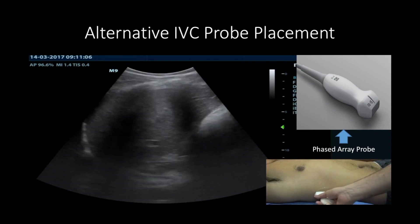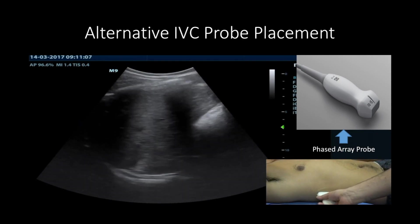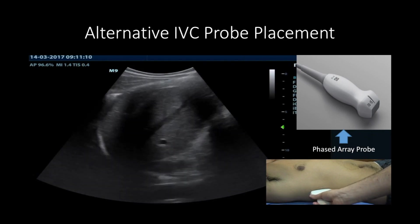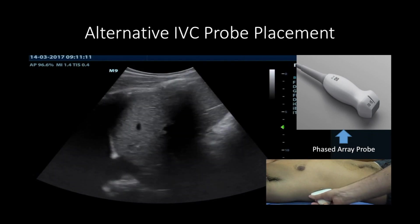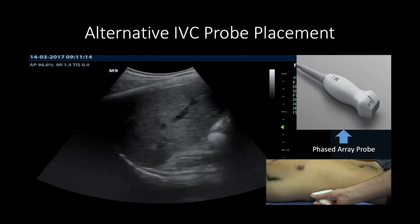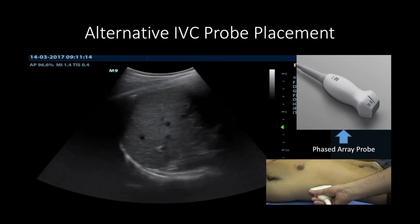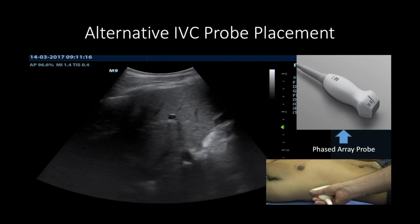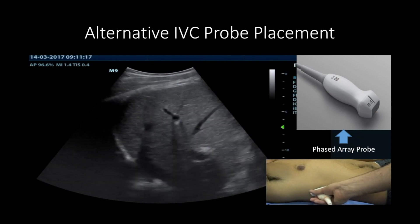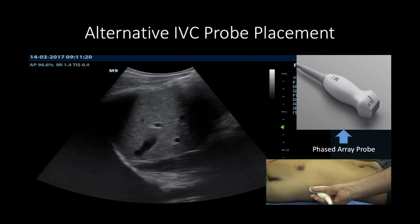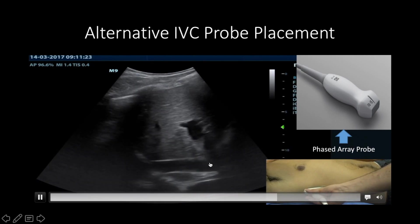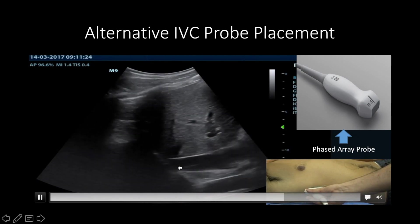For the right subcostal view, use the phased array probe and place it on the area of the liver at the mid-axillary line, with the probe marker pointing towards the patient's head. Here you should be able to see the IVC as well as the liver and hepatic veins, though the right atrium might not be visible.